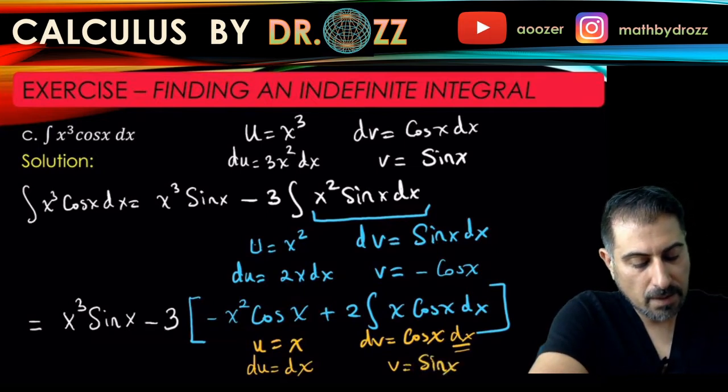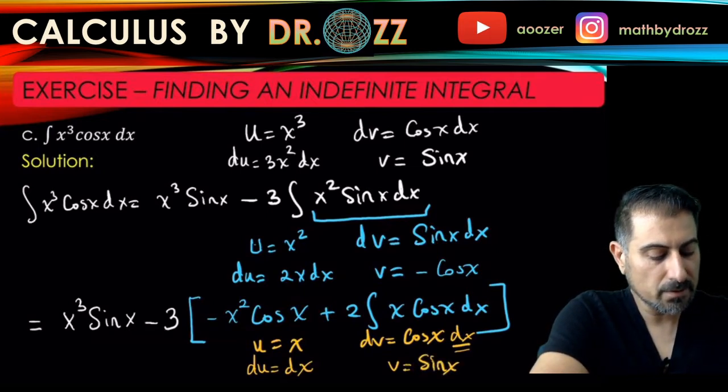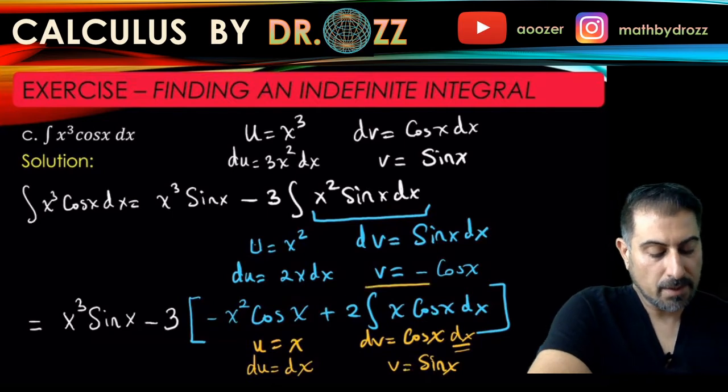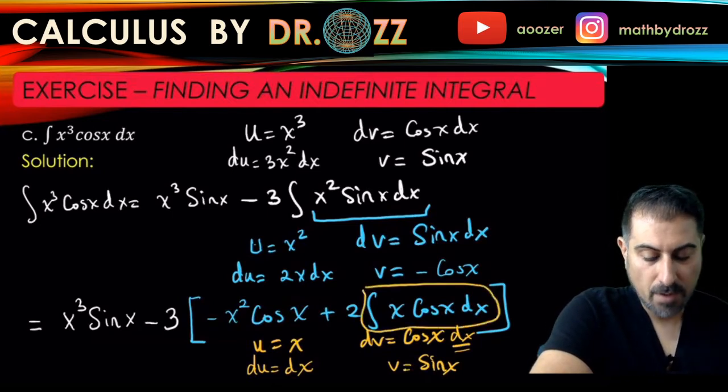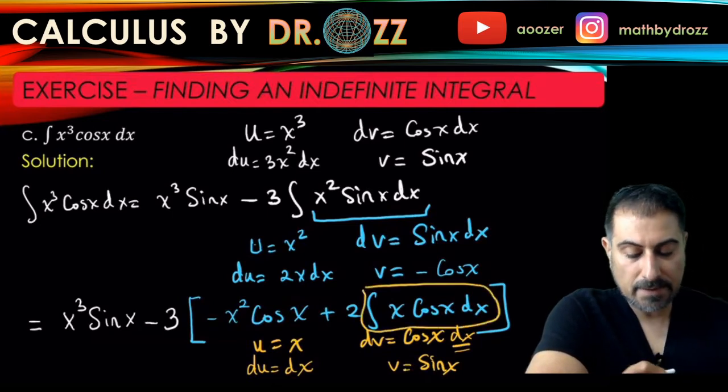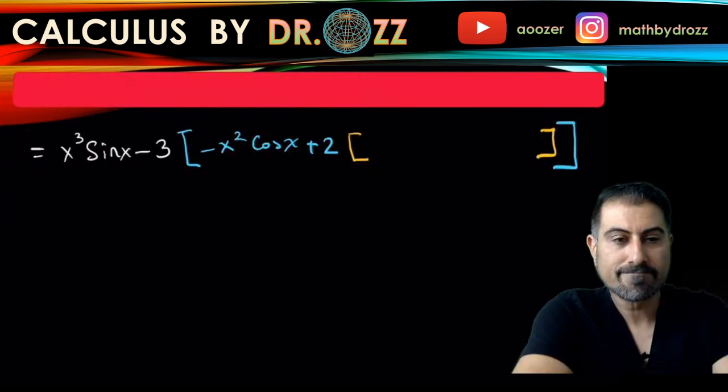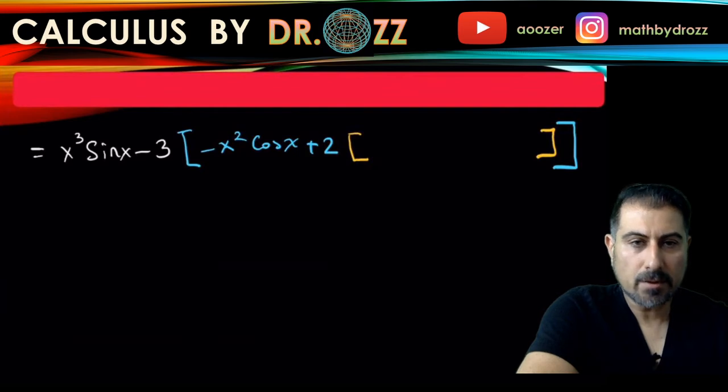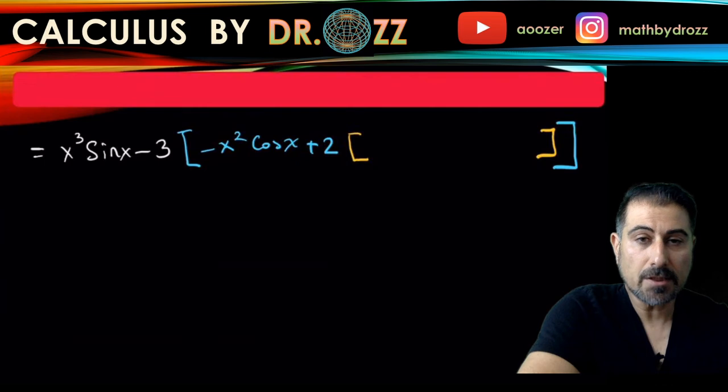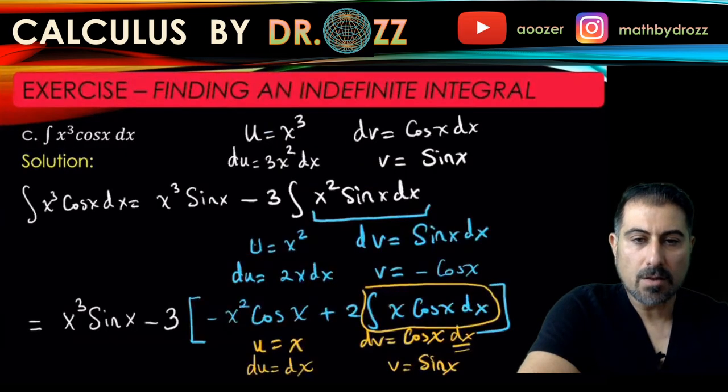So all I'm going to do is to replace this integral by the integration by parts formula. So I'm going to do it in the next slide. So let me just copy everything down here first. I copied everything down here, so in the yellow brackets I'm going to put uv minus vdu.